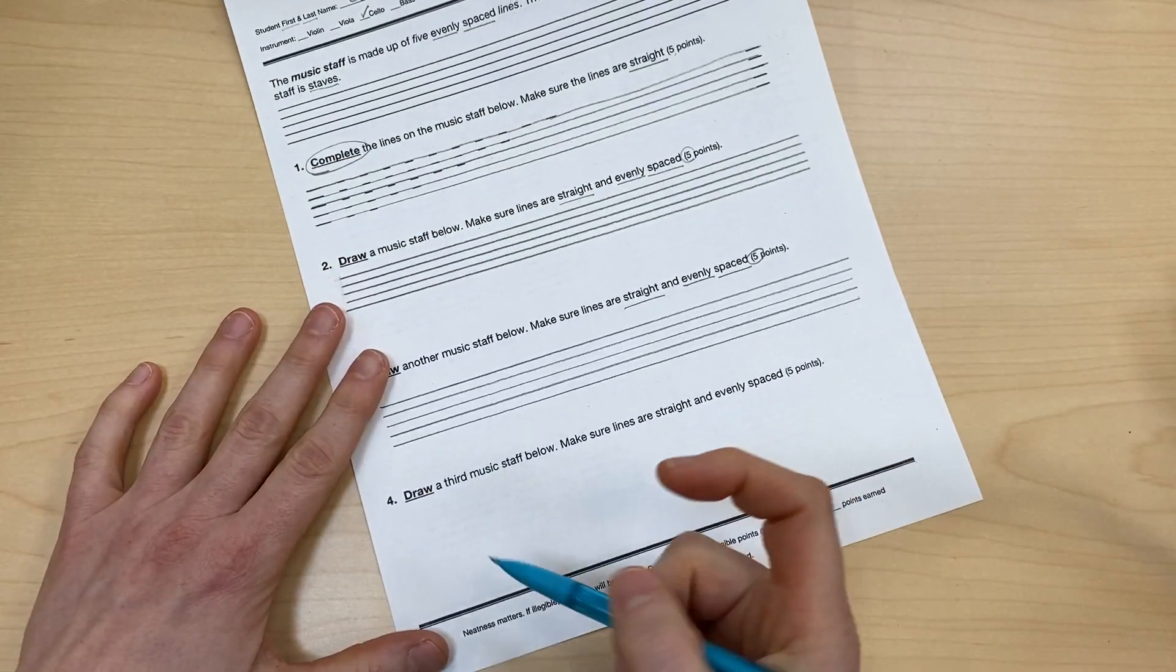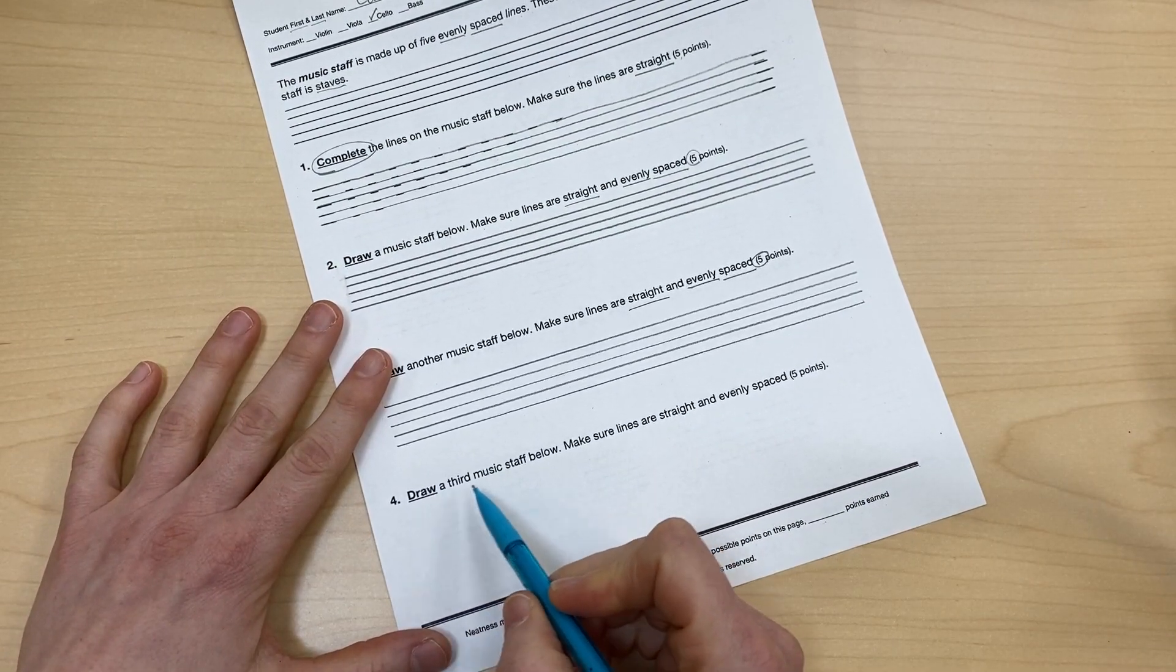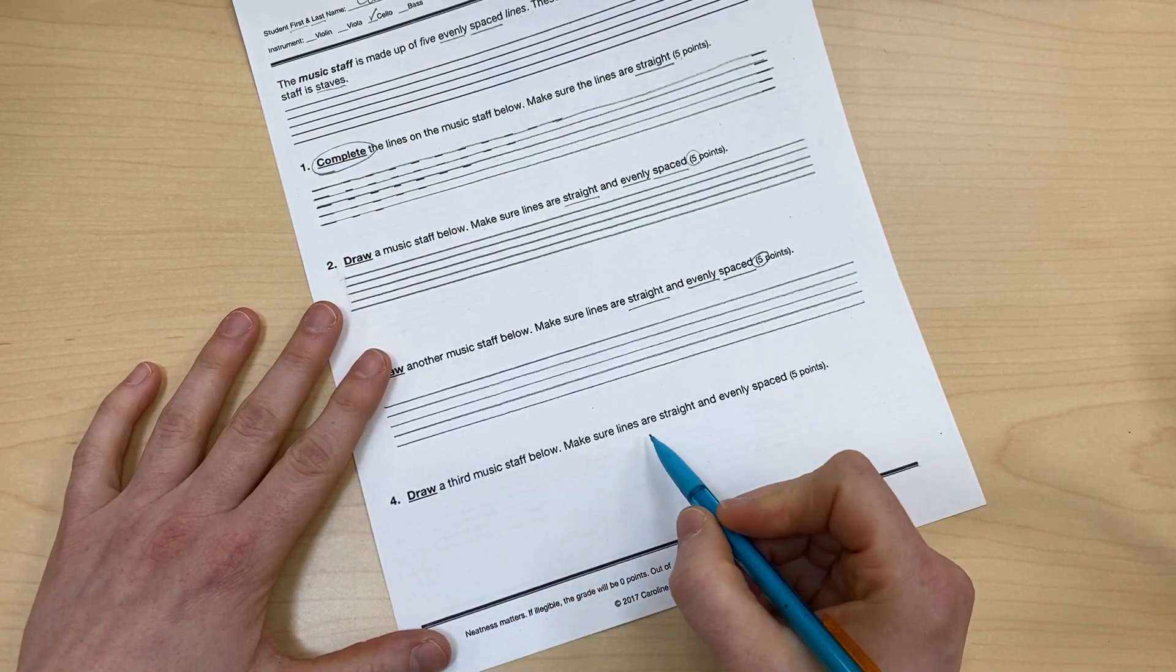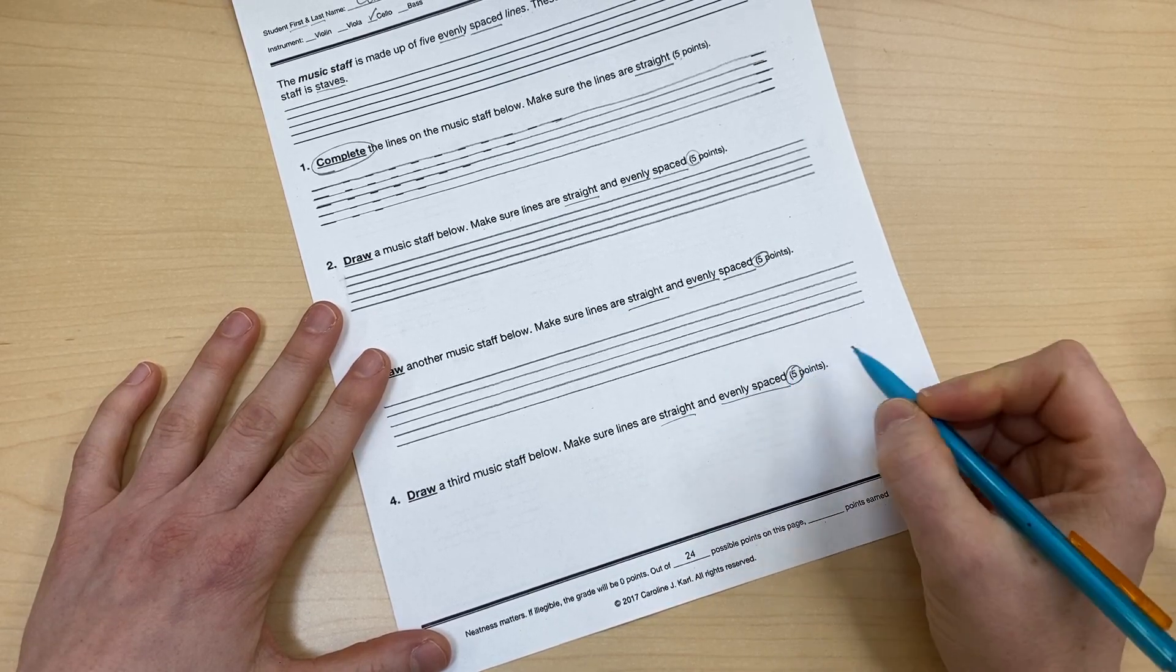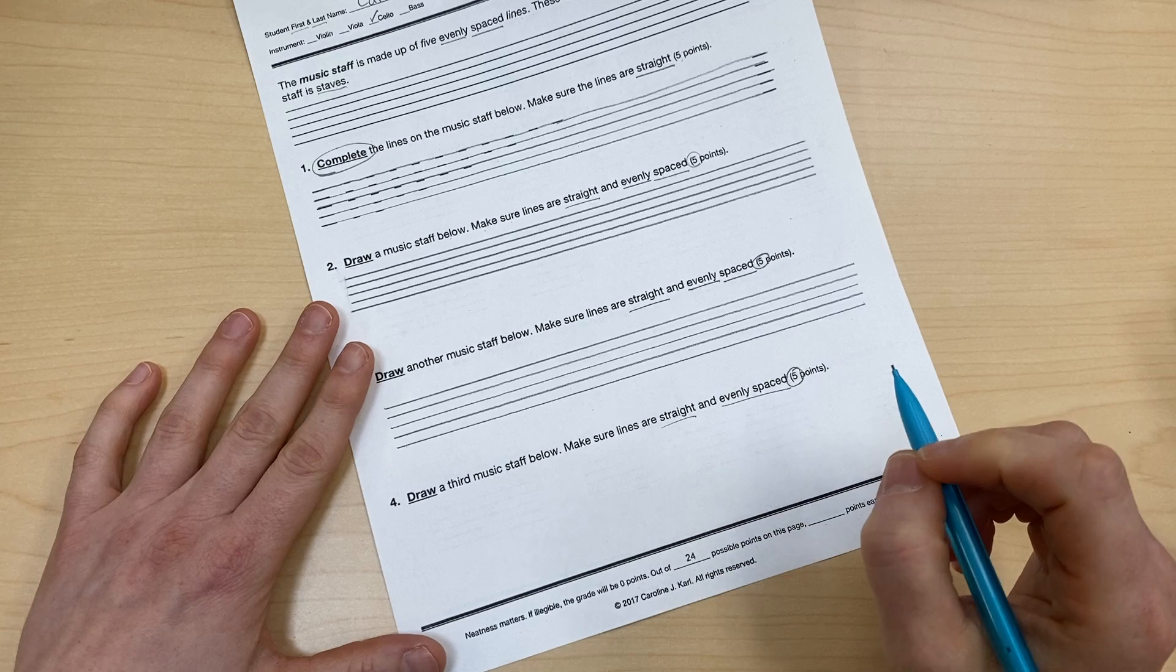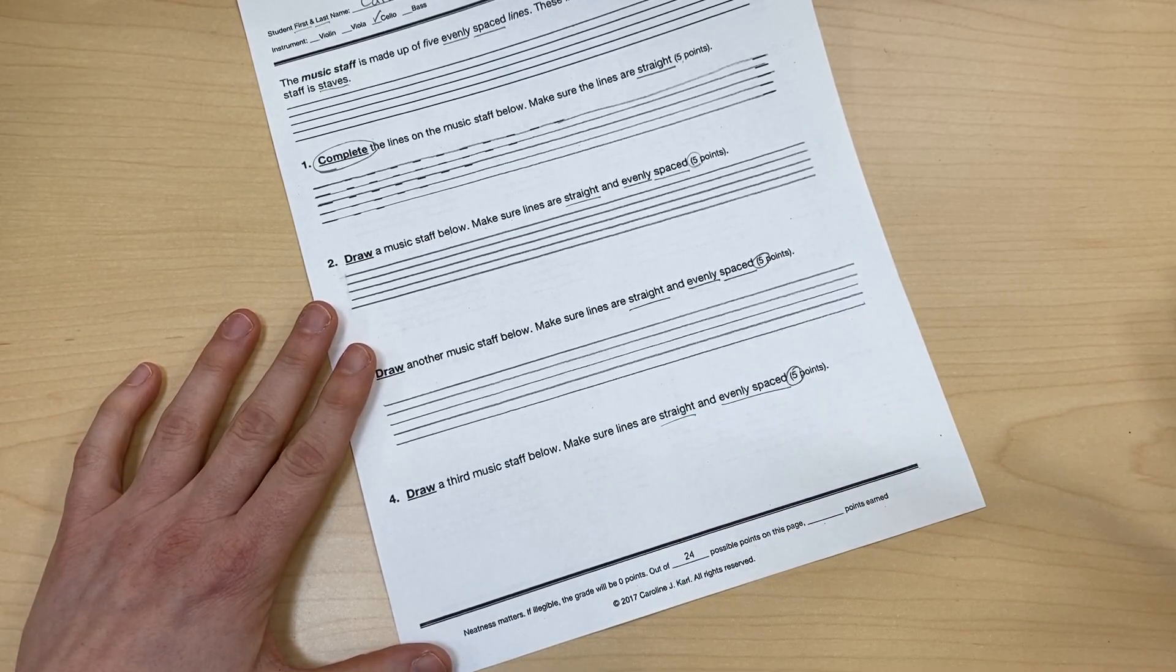And then my last one on this is number four: draw a third music staff below. Make sure the lines are straight and evenly spaced. And this one's also worth five points. So you can do that one on your own.